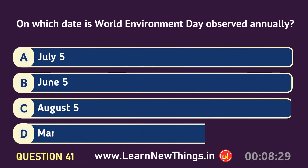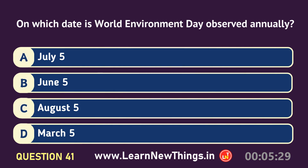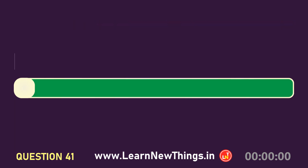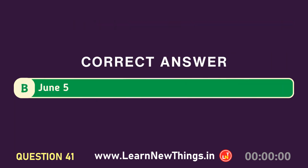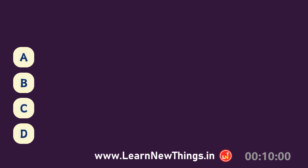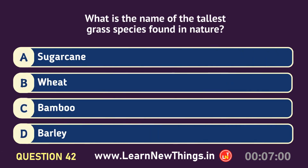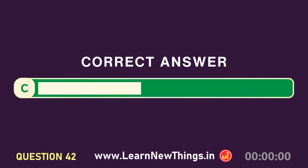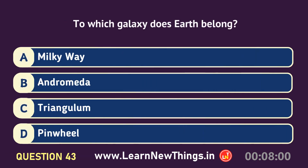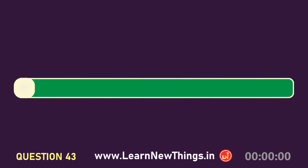On which date is World Environment Day observed annually? June 5th. What is the name of the tallest grass species found in nature? Bamboo. To which galaxy does Earth belong? Milky Way.